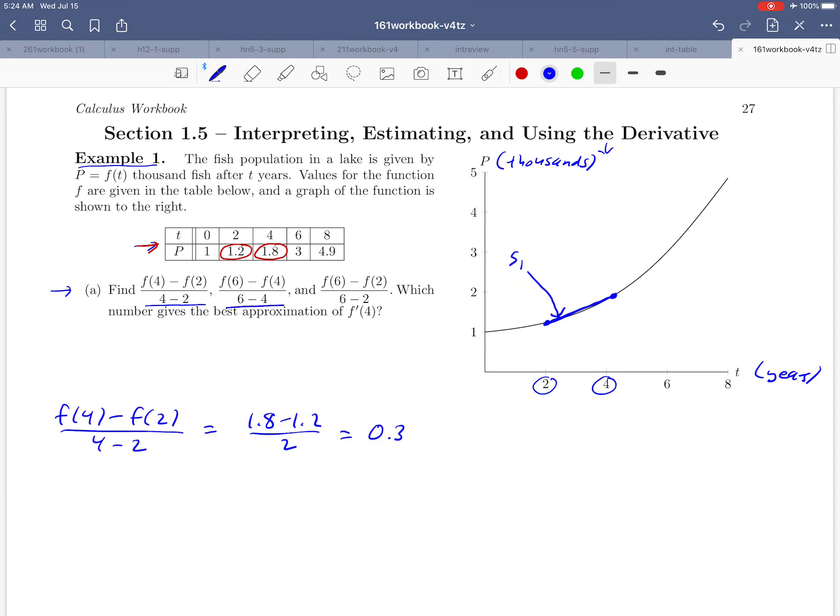Moving on to the next one, f of 6 minus f of 4 over 6 minus 4, same idea. We're just calculating an average rate of change between two different points. f of 6 is 3 and f of 4 is 1.8, so we'll subtract those two numbers. And this time we've got a 6 minus 4, which is a 2 in the denominator. So that's going to give us 0.6. And we can think of that 0.6 as also being the slope of a secant line, this time through the points 4 and 6. So if we draw that line, there's S2.